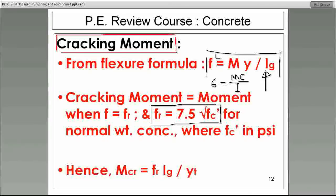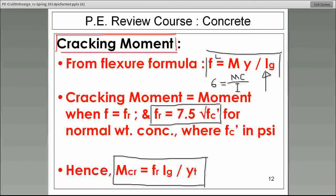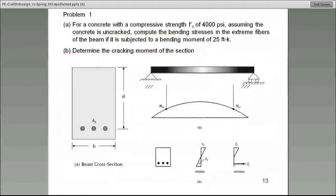Now, in order to calculate the cracking, the moment that causes the first crack, M cracking, down here, we just rework that flexure equation. There it is. M cracking is equal to FR I sub G, gross moment of inertia, divided by Y sub T. Now, why do we say Y sub T? T stands for tension. So, Y is the distance between the centroid of that cross section to the side that's in tension, either top or bottom. Let's move on to the next slide.